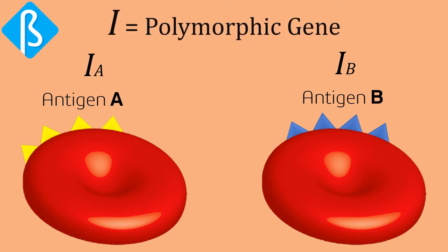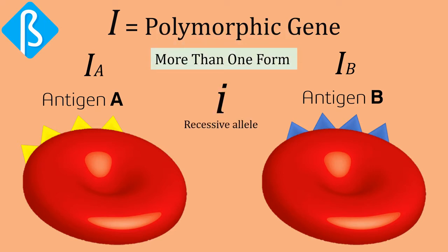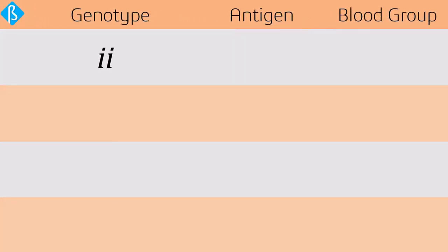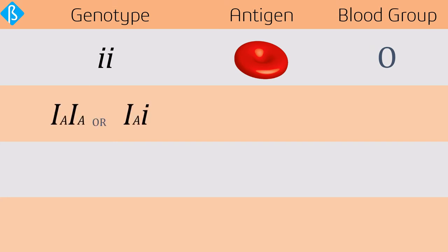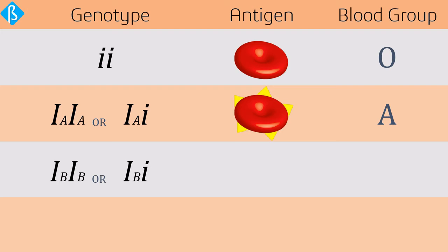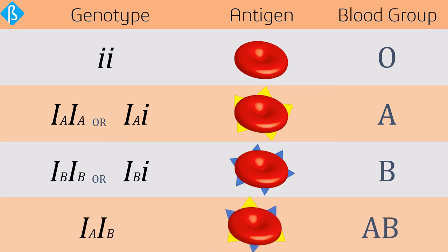Gene I is called a polymorphic gene, meaning it has more than one form. There is also a recessive allele symbolized by lowercase i. If a person has both recessive alleles (ii), no antigen is present on RBCs — that person has blood group O. A person with Iᴬ Iᴬ or Iᴬ i alleles has blood group A, and a person with Iᴮ Iᴮ or Iᴮ i alleles has blood group B.